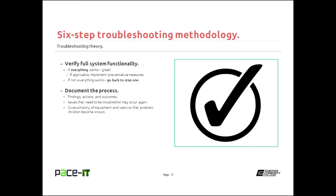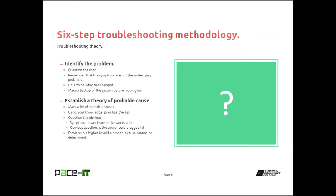Now that you've got the plan and executed it, did everything go right? That's where you verify full system functionality. If everything works out, you can implement some preventative measures — maybe some end user education, or document processes that need to change to keep this problem from happening again. Be aware that when you resolve one problem, you can sometimes introduce another. If you don't have full system functionality, you need to go back to step one and walk through the process again until you achieve full system functionality.